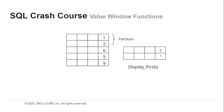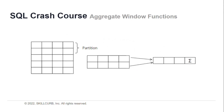The value window function divides the result set into different partitions on the basis of some column, and then a column is specified on the basis of which all other values in the partition for that column are set. For the aggregation window function, it divides the result set into partitions on the basis of a particular column, then calculates the sum, average, or any other operation for all rows in that partition, creating a new column and assigning the same value to all rows in the partition.